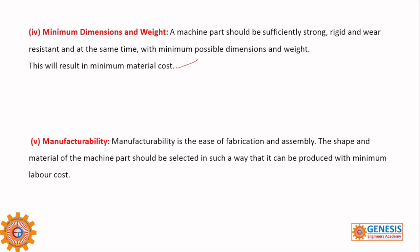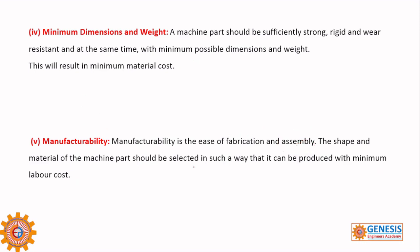Under manufacturability — the ability to manufacture and the ease with which we can manufacture and assemble — if we have a small material, we need to manufacture it and then assemble it, which can create problems. That is why we need to redesign dimensions. The shape and material of the part should be selected such that it can be produced with minimum labor cost. Design should consider the available manufacturing facilities. We can increase productivity also — that is the meaning of manufacturability.